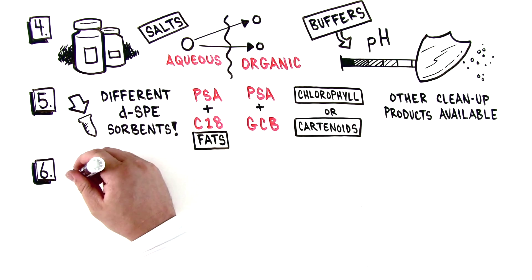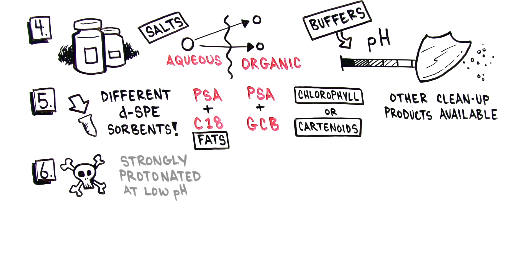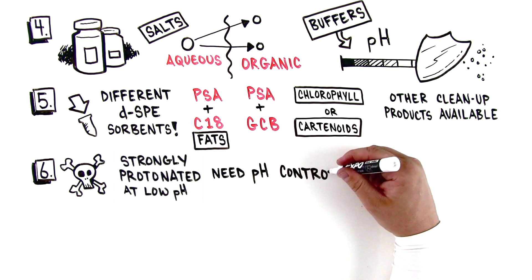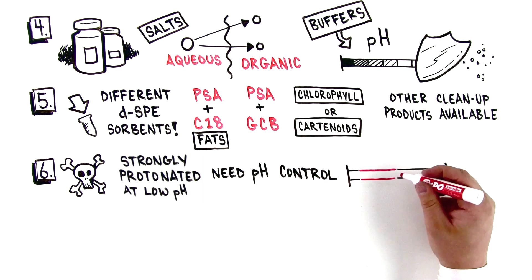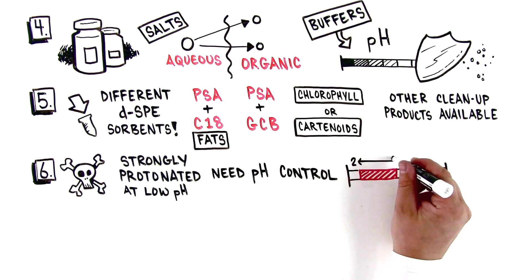Number six, some pesticides, like those strongly protonated at low pH, require pH control and need to be buffered to pH 2 through 7 prior to extraction.